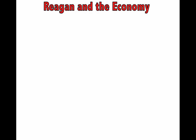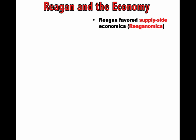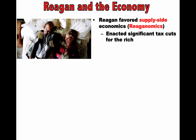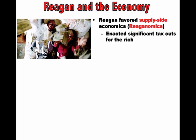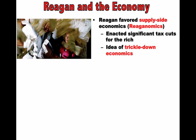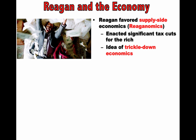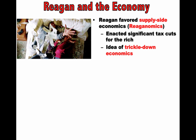Reagan favored what was known as supply-side economics, or Reaganomics. The basic idea was significant tax cuts for the rich, with the expectation that wealthy individuals and the private sector would invest and spend money to improve the economy — this idea of trickle-down economics. If a business or wealthy individual is taxed less, they'll hire more workers and grow. This is very similar to the policies of Republican administrations of the 1920s under Calvin Coolidge, Warren G. Harding, and Herbert Hoover.